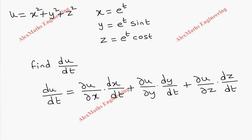Now coming to the first term, partial u by partial x: the partial derivative of u with respect to x will give us 2x, and y square and z square are constant so they will be 0. Then dx by dt: the derivative of x with respect to t is e power t only.